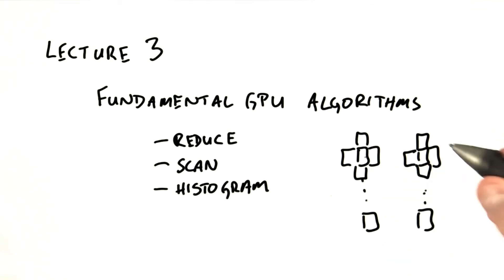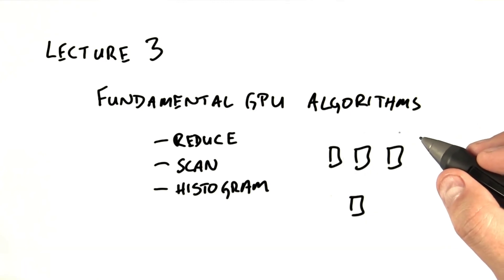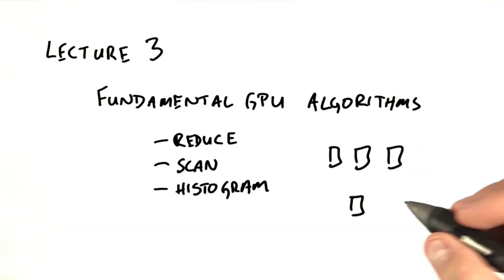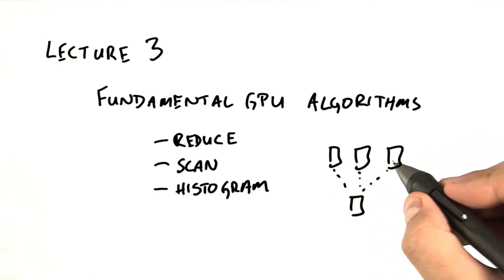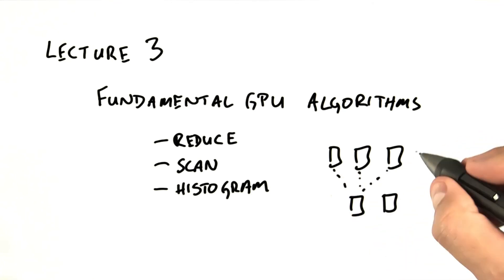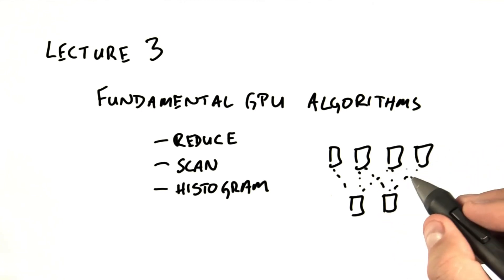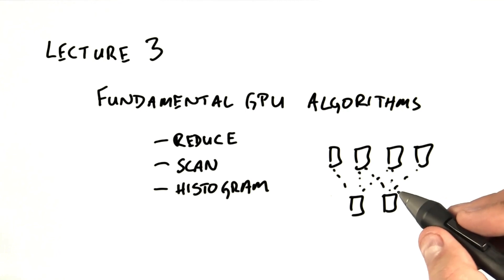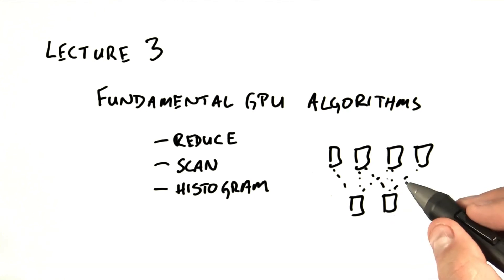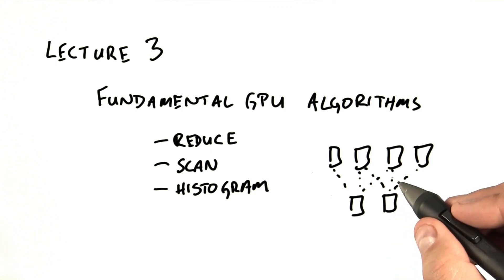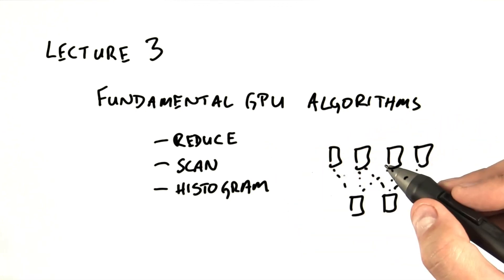However, not all communications fall into these categories. Some have more complex computation patterns, such as all-to-one or all-to-many communication patterns. For instance, this element here depends on these three elements, and the computation of this element will depend on these three elements — and notice there's some overlap, so that's a bit more complicated. We'll cover these more complex computation patterns and three primitives that can implement them: Reduce, Scan, and Histogram, which we'll also use in this week's homework.